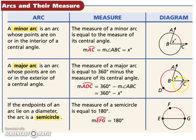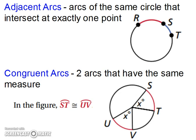If the endpoints of an arc lie on a diameter, so like E and G, then the arc is a semicircle and half of a circle is 180 degrees. Adjacent arcs are arcs of the same circle that intersect at exactly one point. They're basically next to each other. Congruent arcs are two arcs that have the same measure. In the figure, arc ST and arc UV are congruent.